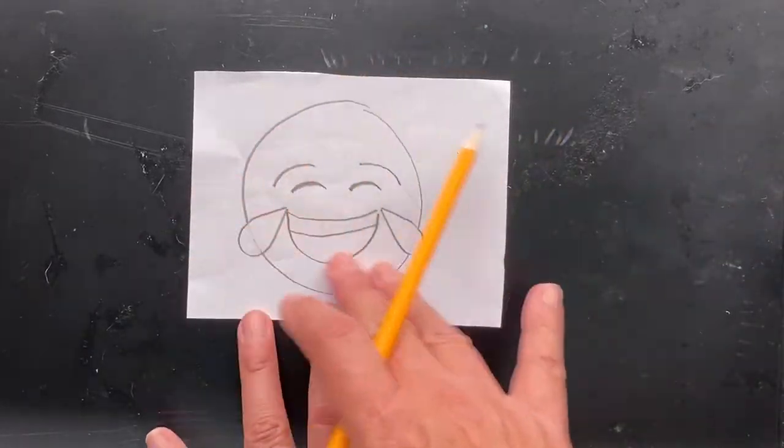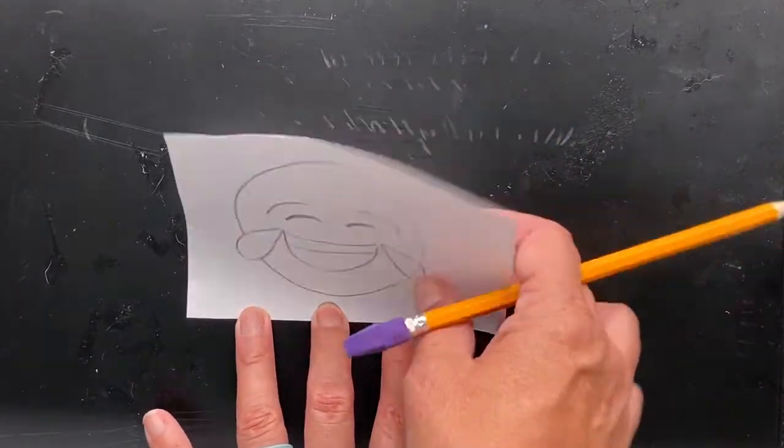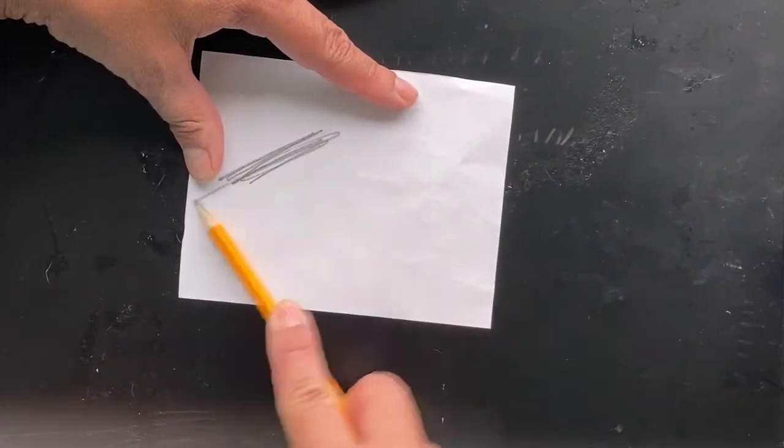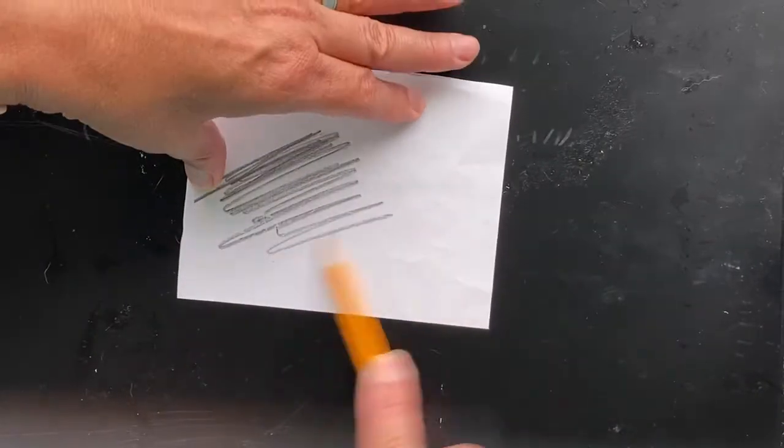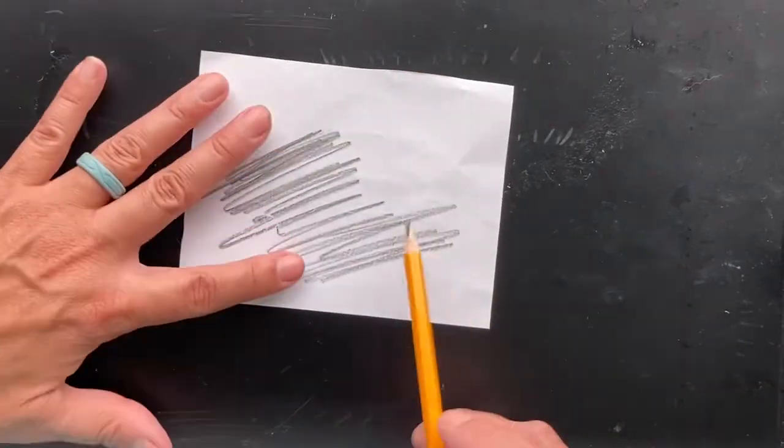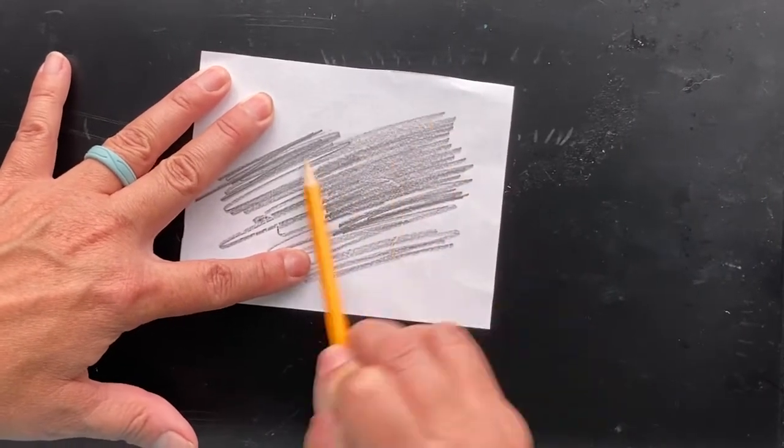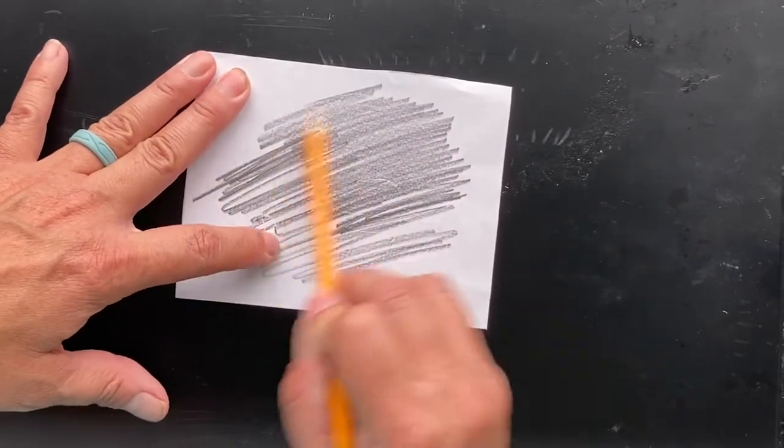So after you have your object drawn on your paper, you're going to turn over your paper and you are going to take your pencil and you are going to color on the back with your pencil by doing this.